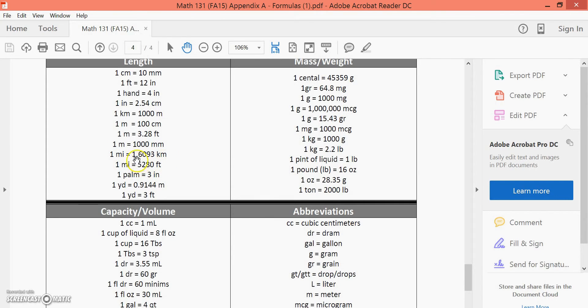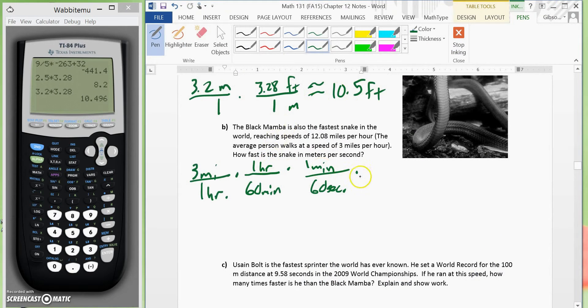To change this to meters, we had to move this decimal three places to the right. So it would be 1,609.3 meters. So it would be 1,609.3 meters all over one mile.